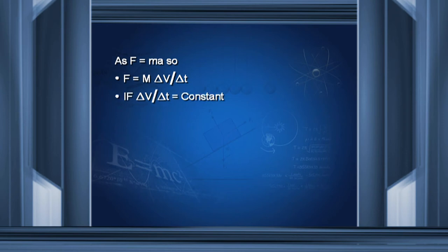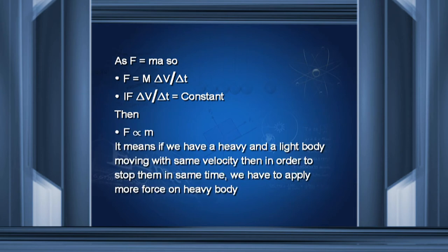From F equals M delta V upon delta T, if delta V upon delta T is constant, then F is directly proportional to the mass of the body. If we have a heavy body and a light body moving with the same velocity, in order to stop them in the same time, we have to apply more force on the heavy body. For example, with a truck and a bicycle both moving at the same velocity, to stop them within the same time interval, we must apply more force on the truck.